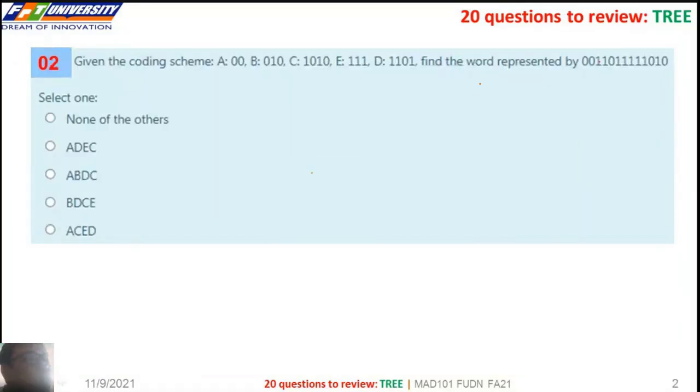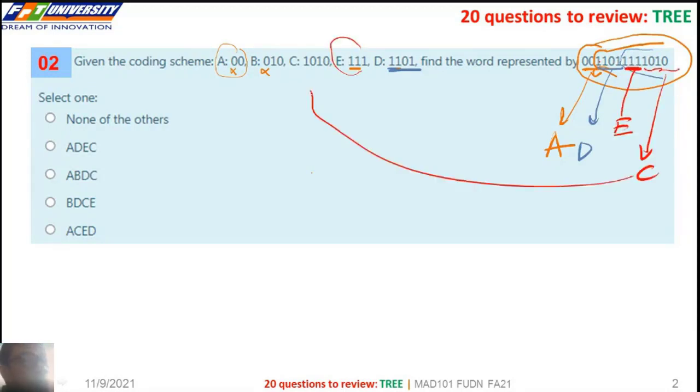The next question. We want to find the word represented by the bit string here. We find here 0, 0, 0. So here we choose A. We have 1, 1, 0, 1, D here. And this is the rest. So E: 1, 0, 1, 0. You see here. So A, D, E, C.